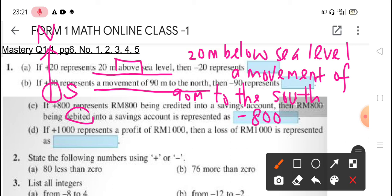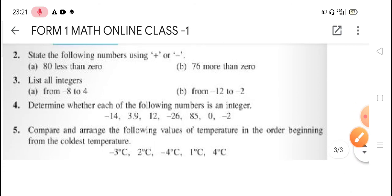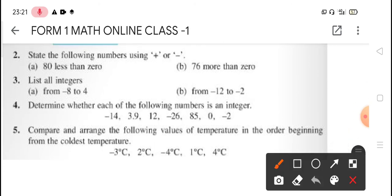Next question D. If positive 1000 represent a profit, then a loss. Loss is opposite, so we will get negative 1000. Next, question 2. State the following numbers using positive or negative sign. Question A. If we wish this 80 less than 0, less than 0, so we need to put negative sign. Question B. 76 more than 0, more, so we get positive.